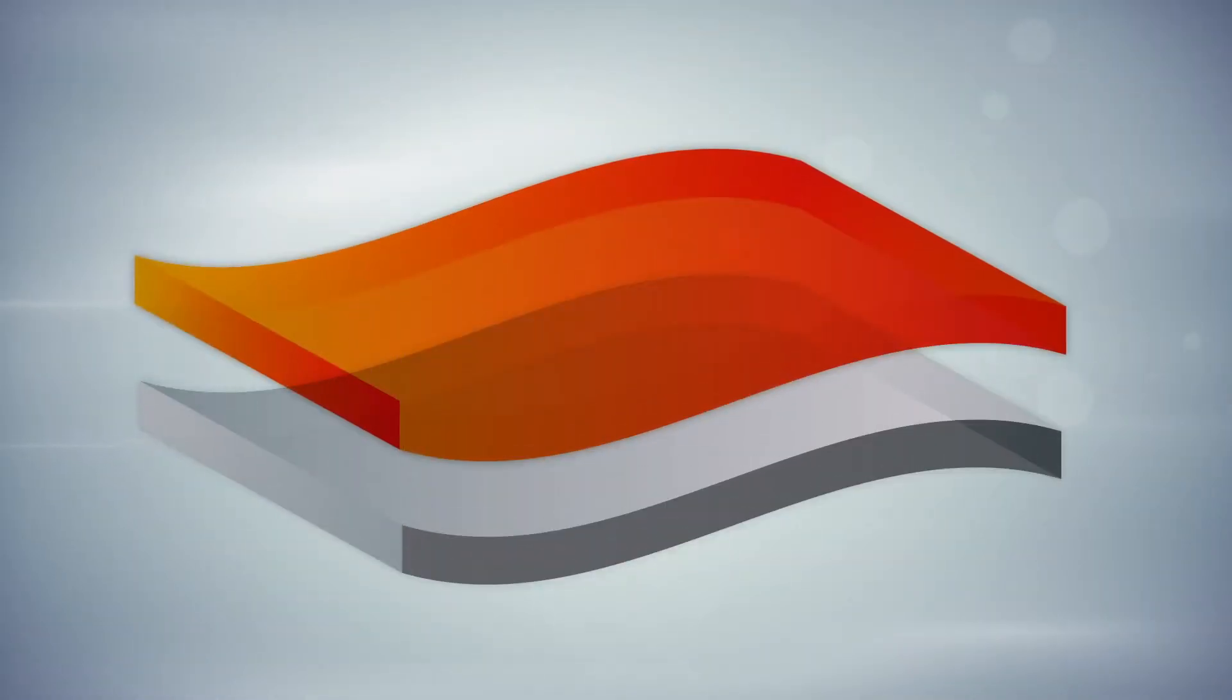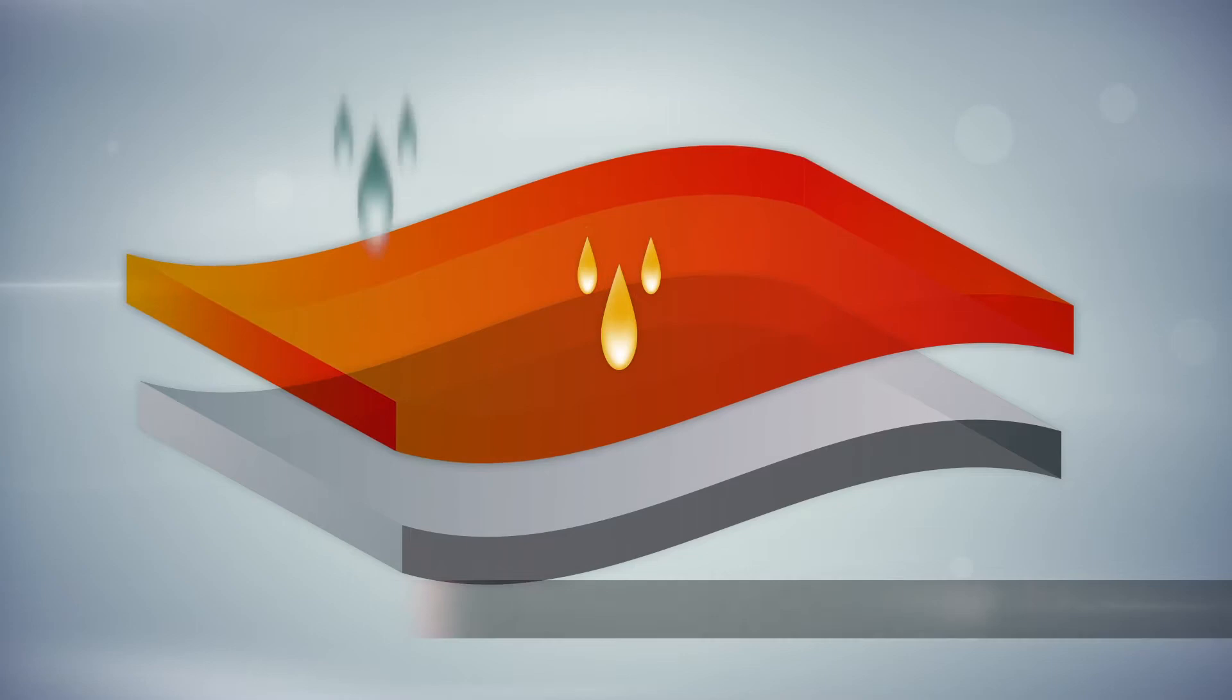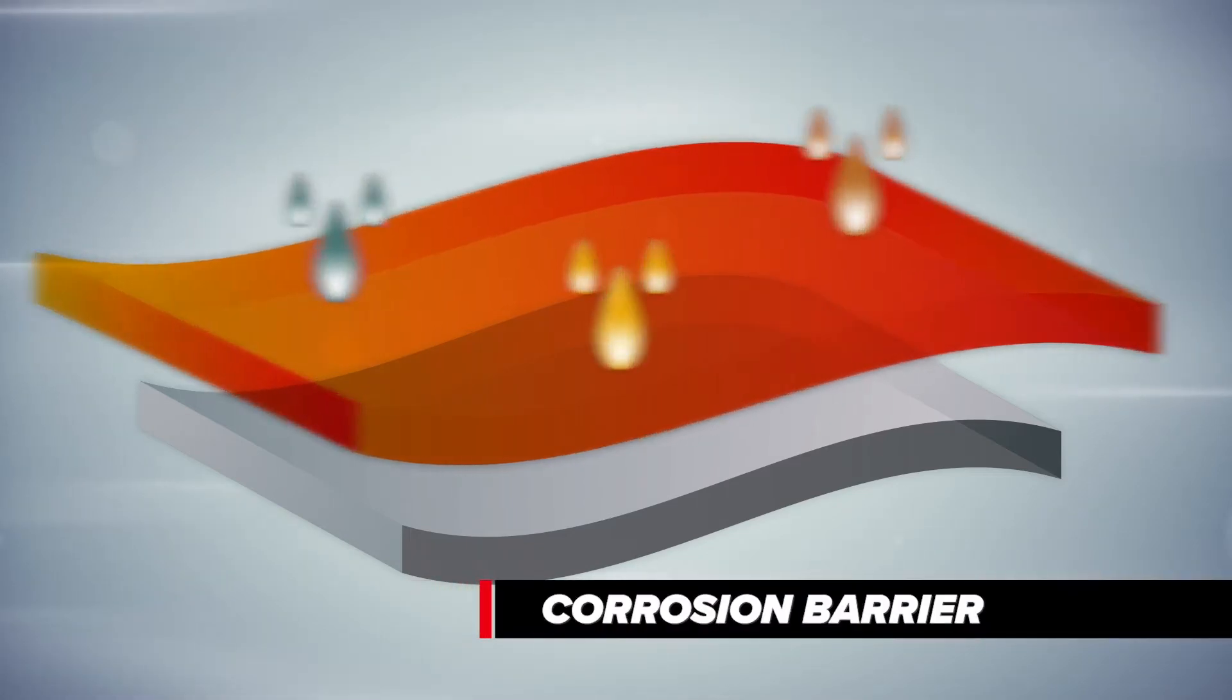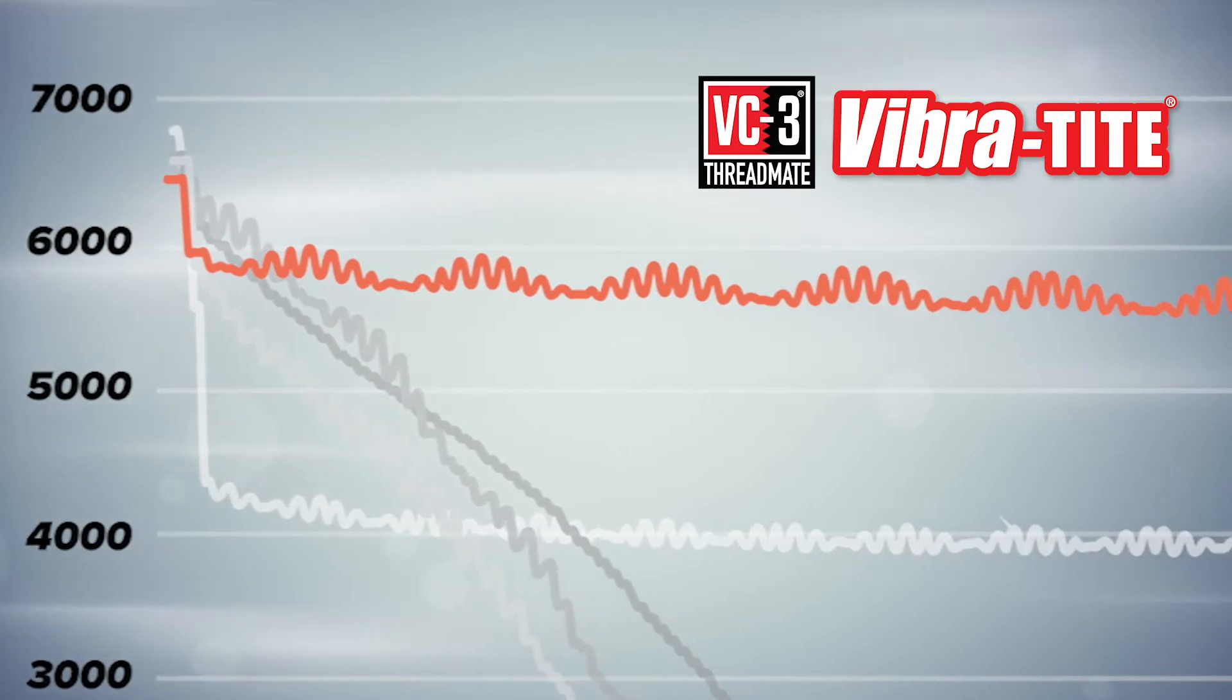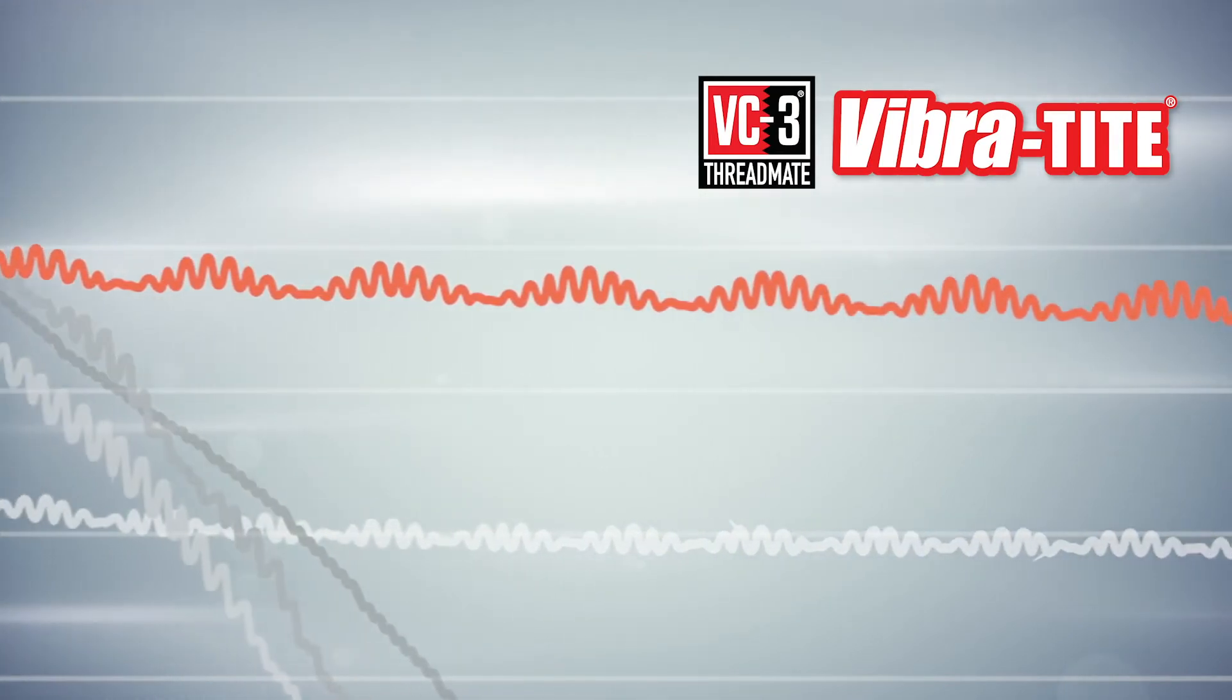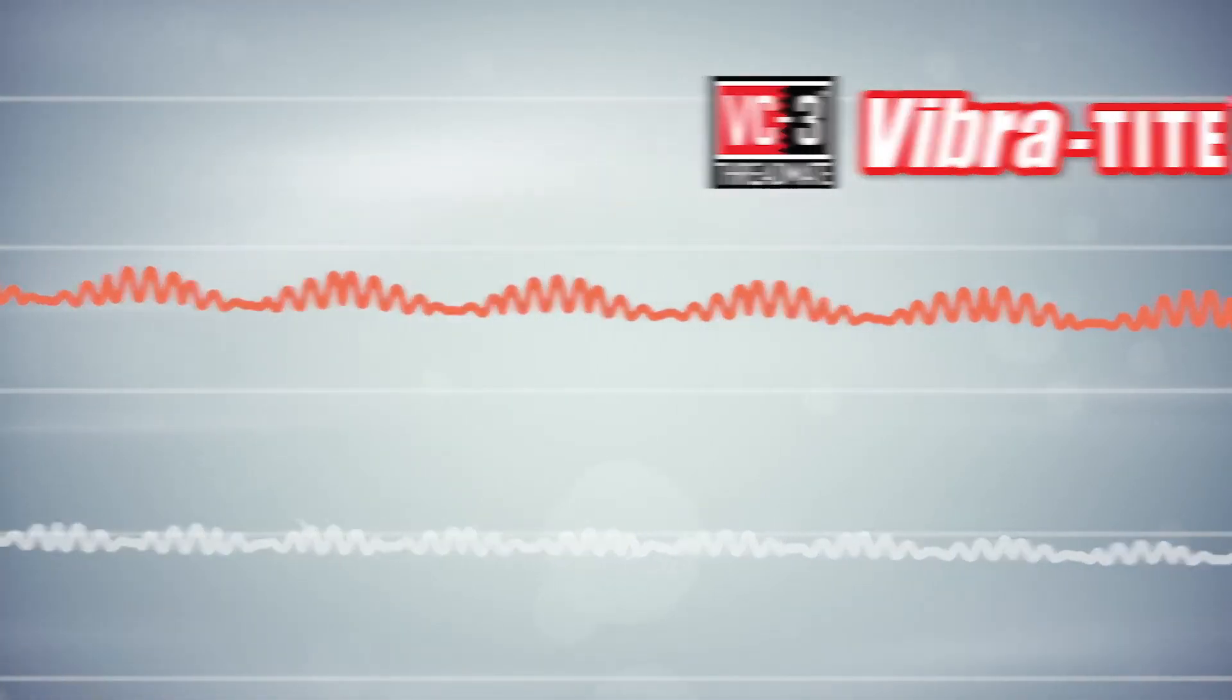In fact, VC3 Threadmate is resistant to most solvents and acts as a partial corrosion barrier. Vibration comparison testing shows that VC3 Threadmate outperforms other thread lockers and protects against fastener failure longer.